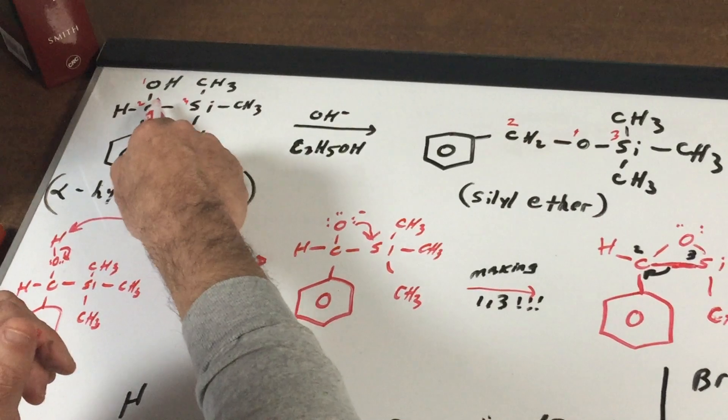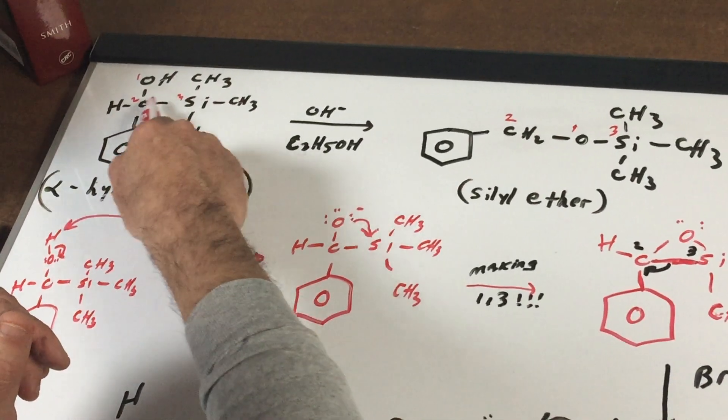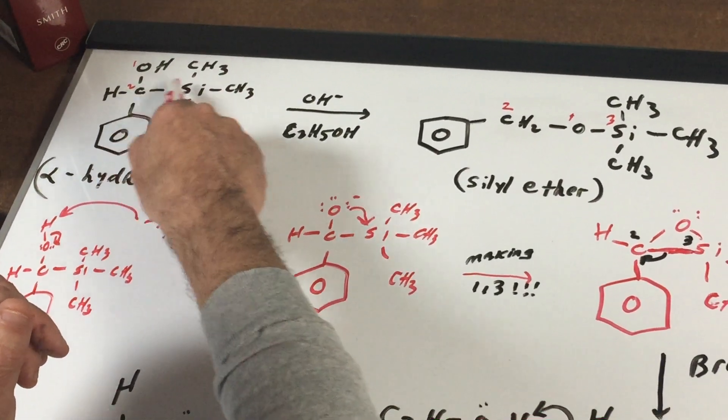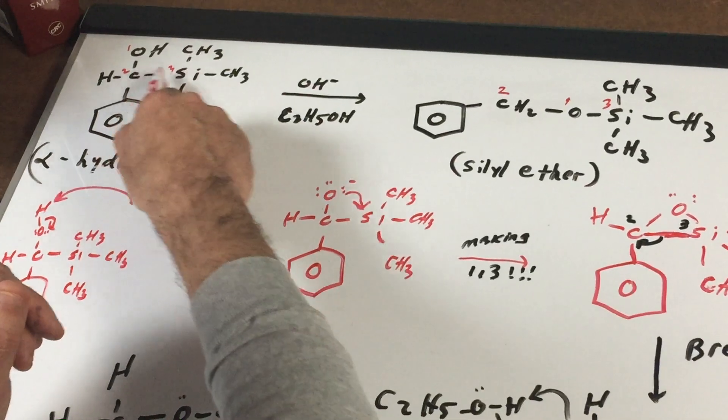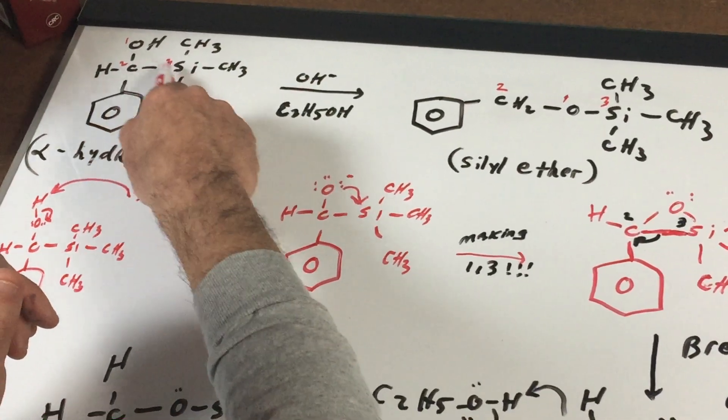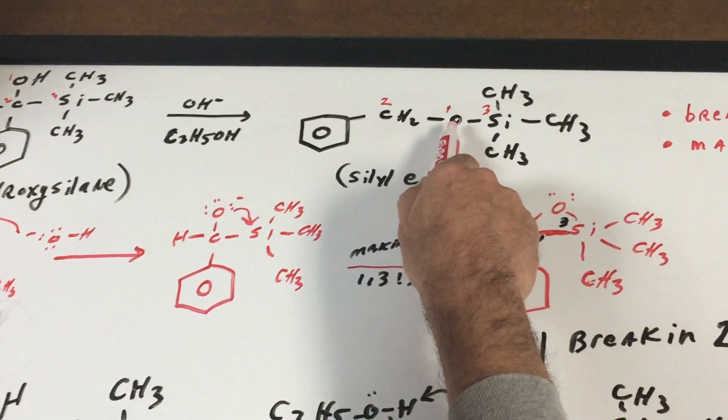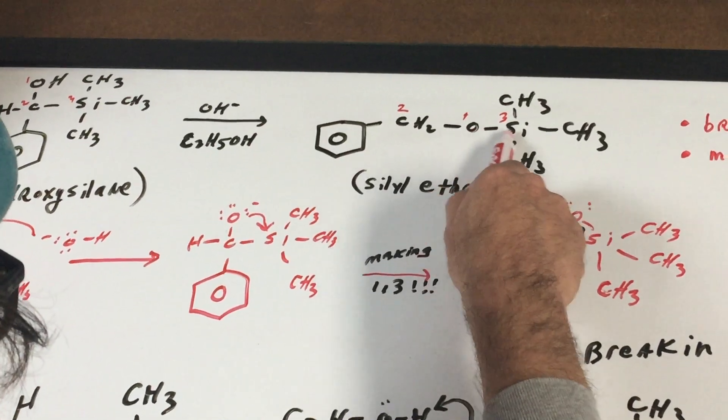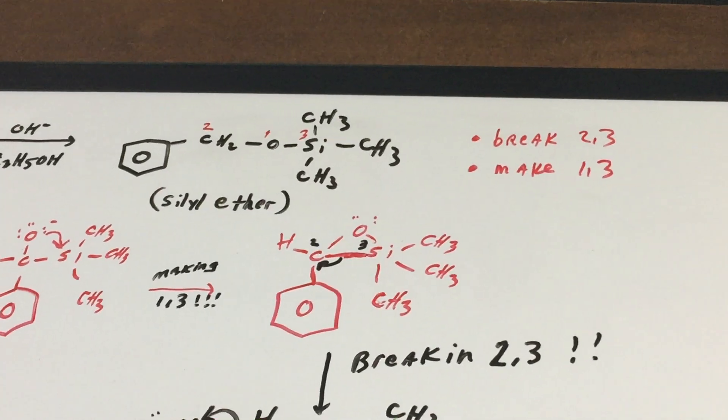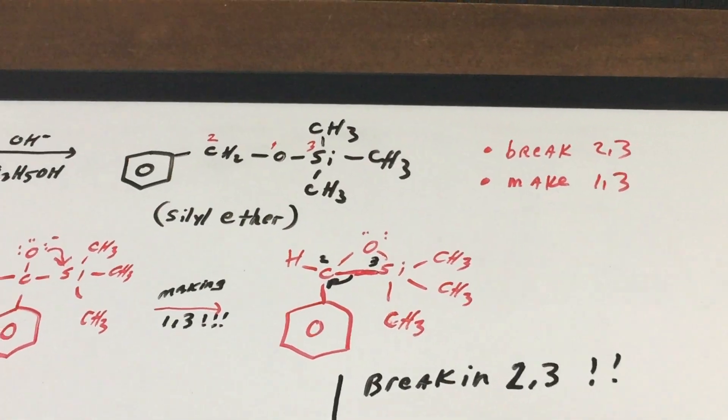What I'm going to do is number all the atoms. I see here what needs to be done is I need to break carbon two and silicon - carbon two and silicon three. So I'm going to break two-three, and it looks to me that I'm going to be making a new linkage one-three. So I'm going to break two-three and make one-three.